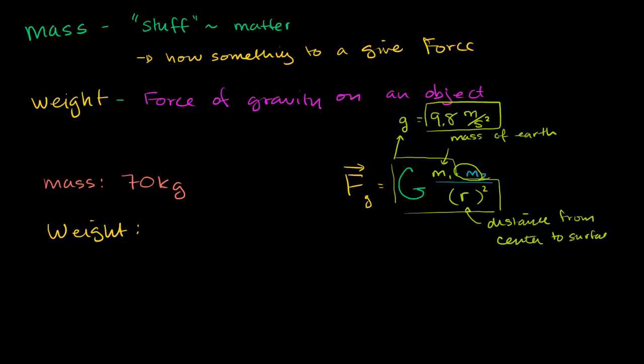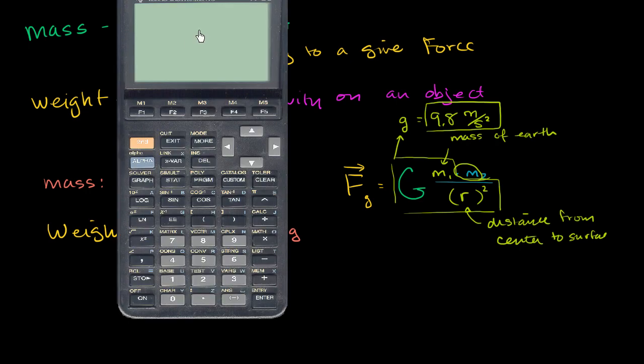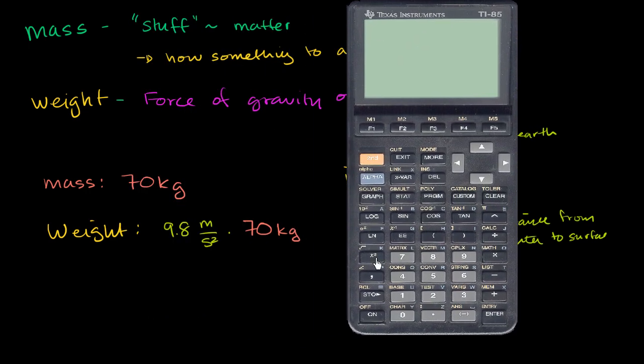So my weight, my weight on the surface of the Earth is this 9.8 meters per second squared, 9.8 meters per second squared, times my mass, times 70 kilograms, times 70 kilograms. And so this is going to be, I could get my calculator out. Why don't I just get my calculator out and do the math? I was going to round it to 10 and say it's about 700, but let's just actually calculate it. So we have 9.8 times 70 kilograms.